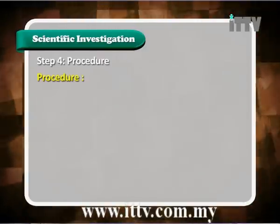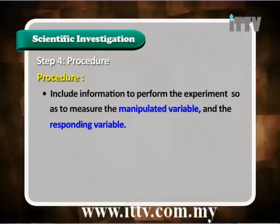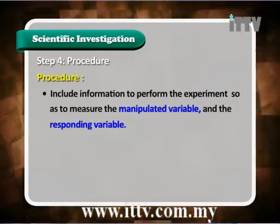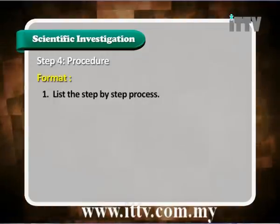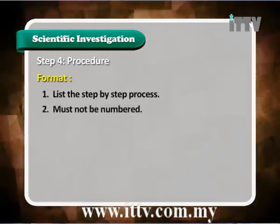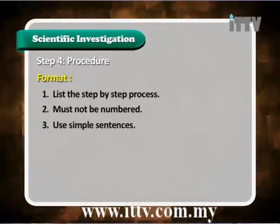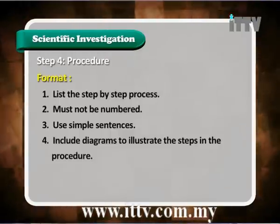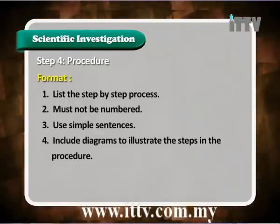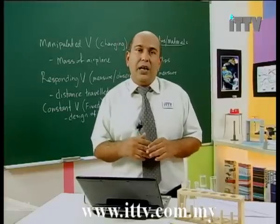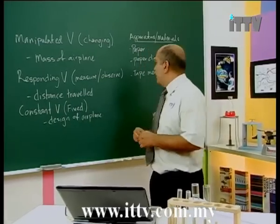Step 4 — procedure: include information to perform the experiment so as to measure the manipulated variable and the responding variable. The format is: number one, list the step-by-step process; two, steps must be numbered; three, use simple sentences; four, include diagrams to illustrate the steps. So we need to come up with a procedure for our airplane experiment.